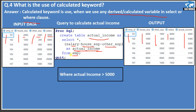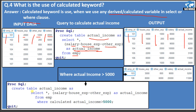The rewritten query is exactly the same as before, with one addition: a WHERE clause using the CALCULATED keyword — WHERE CALCULATED actual_income > 5000. The output shows two observations that have actual income greater than 5000.